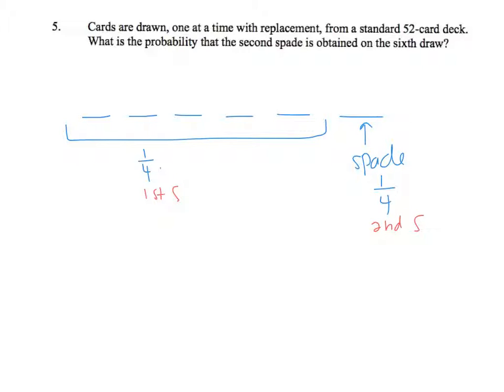Now, in addition to that first spade, so let's say my spade happened here, I have 4 non-spades. The probability of a non-spade is 3/4, and I'm going to raise it to the 4th power because I have 4 of them.